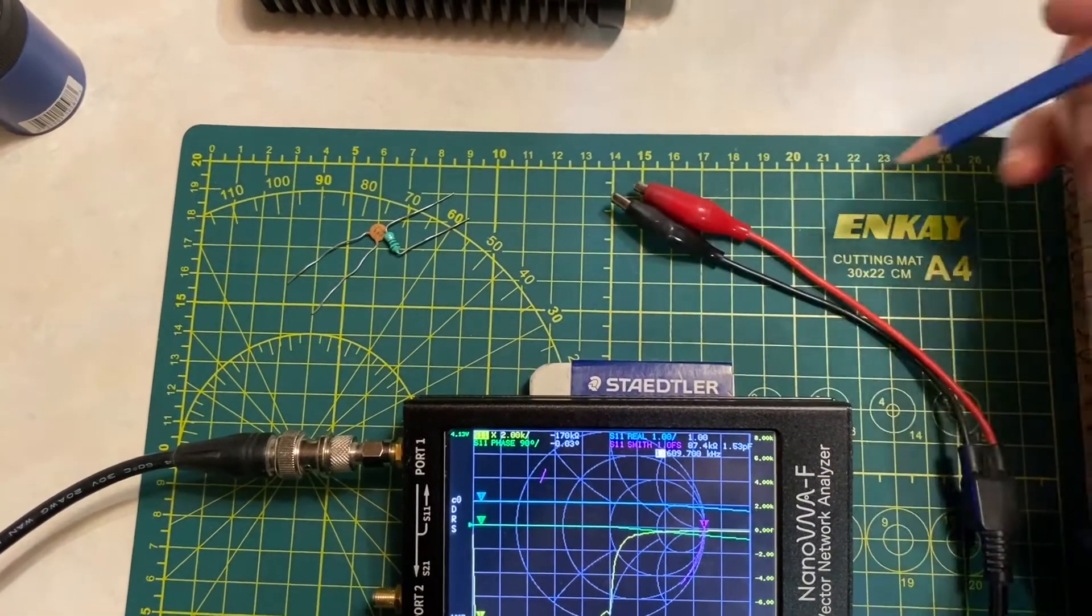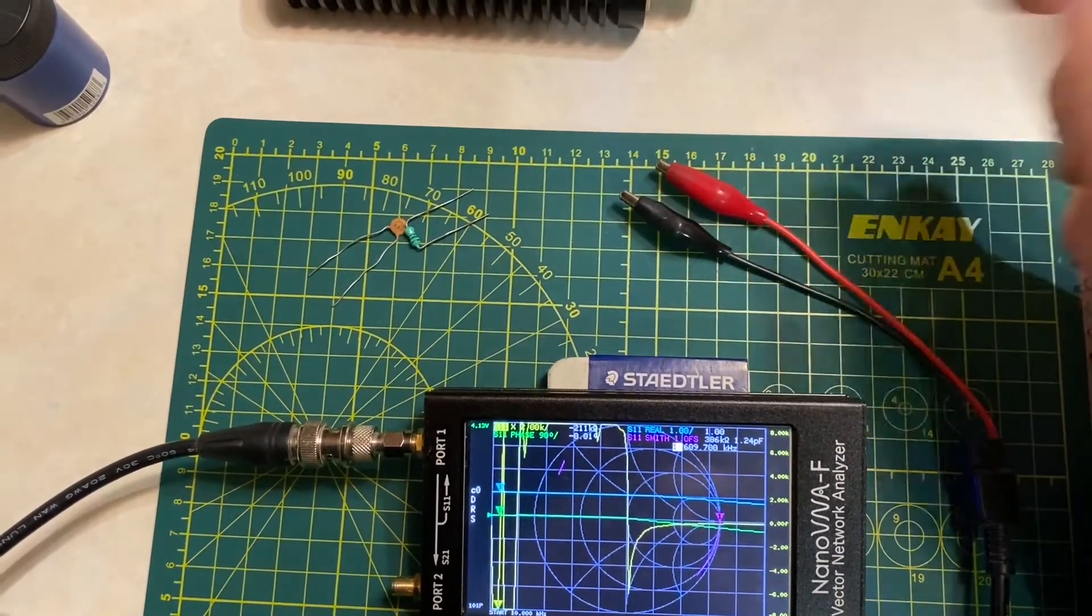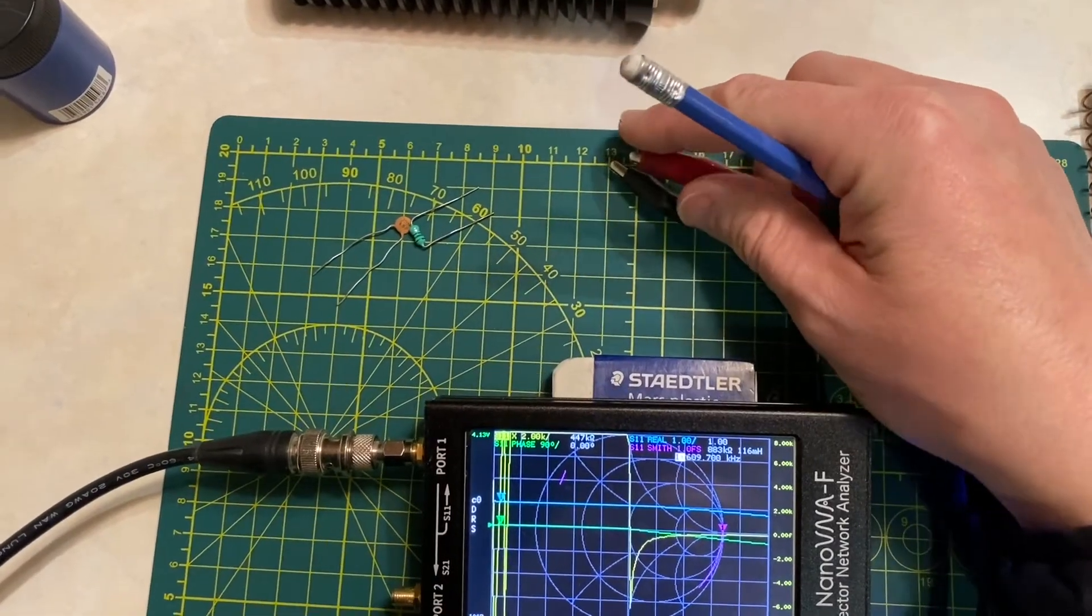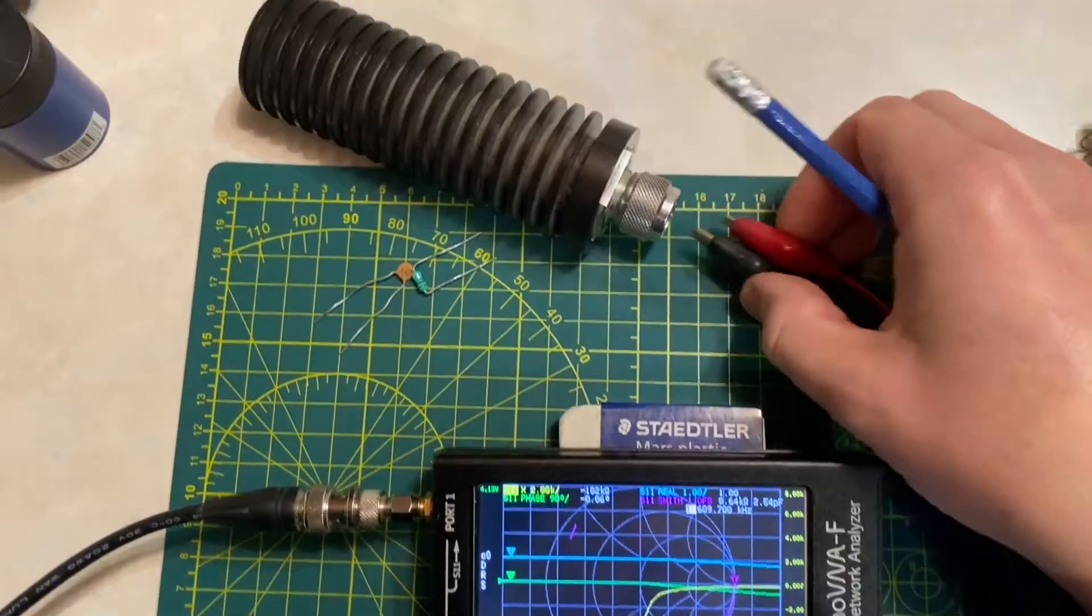In previous attempts to make this video, I never showed viewers how I did the calibration. It's a simple open, short, and load calibration done on the Nano VNA. This is your open state. For the short calibration, you simply clip the alligator leads together.